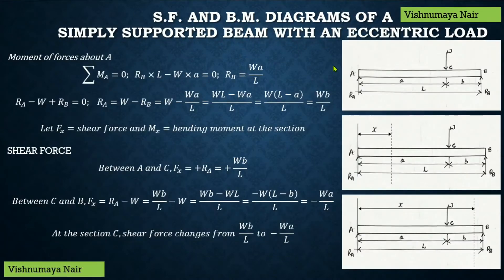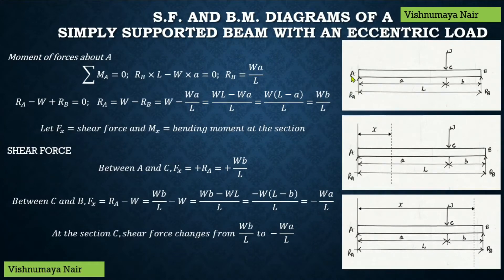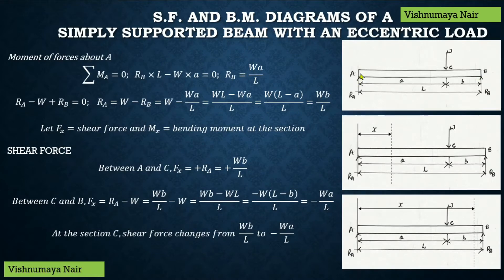A simply supported beam has a hinge support at one end and a roller support at the other end. Let RA be the reaction due to the hinge support at end A, and let RB be the reaction due to the roller support at end B. In order to find out these reactions, we have to take moments about A or about B. Let's take the moments about A.